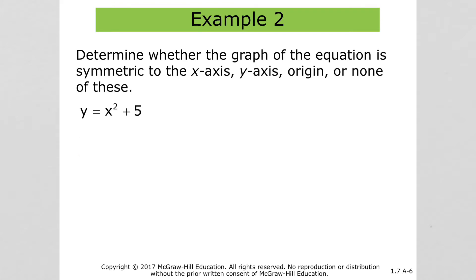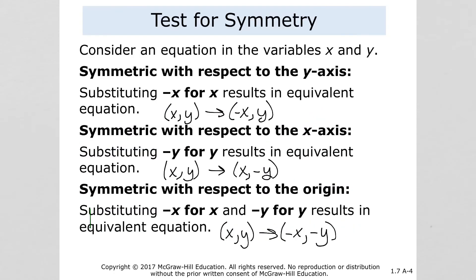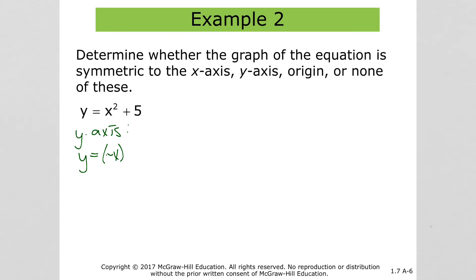Let's try a couple more examples. For this one, when we test the y-axis, we put in negative x. We get negative x squared, and that gives us positive x squared, because negative x times negative x is positive. So we do have an equivalent function here. This function is symmetric with respect to the y-axis.